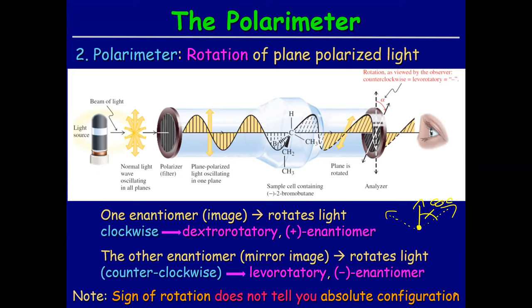This point is very important: the sign of rotation does not tell you anything about the absolute configuration. Meaning, up till now you might know that you have enantiomers, and you might actually be able to find which enantiomer you've got, but it tells you absolutely nothing about the configuration.